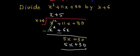And now again we have to subtract. So this 5x will become minus 5x and this plus 30 will become minus 30. 5x minus 5x will get cancelled. Plus 30 and minus 30 will also get cancelled, giving us 0 as remainder.